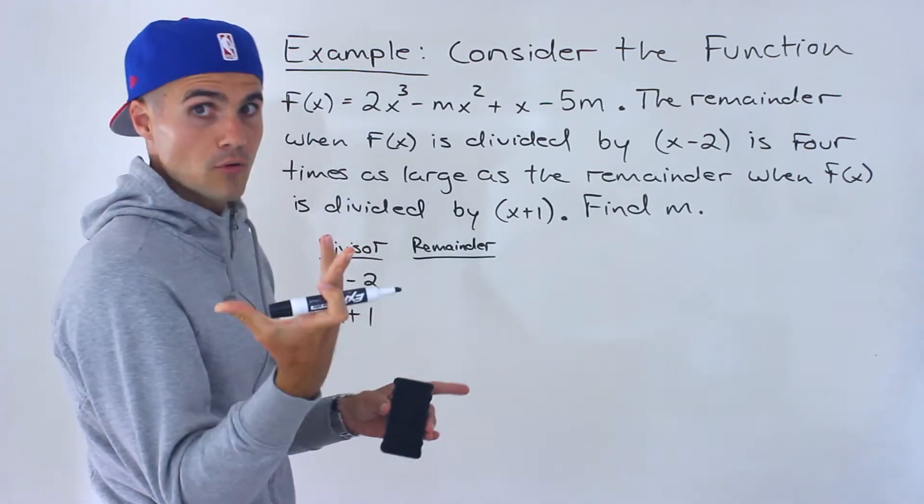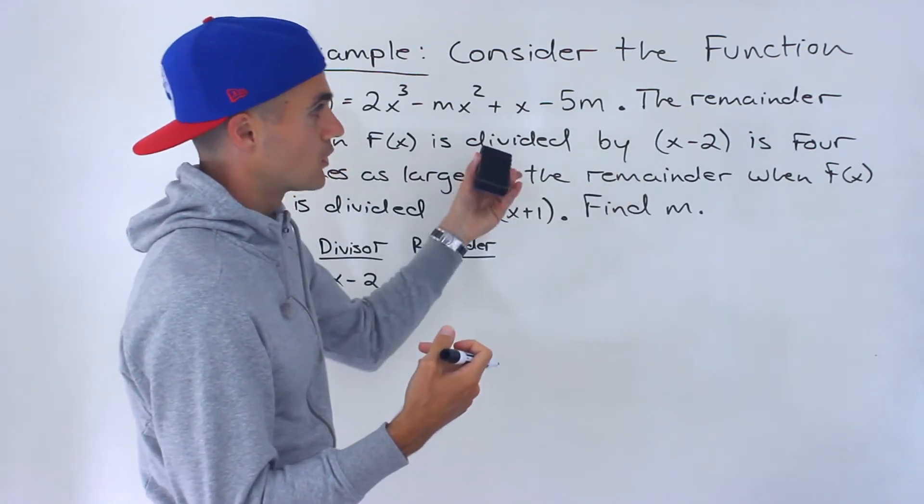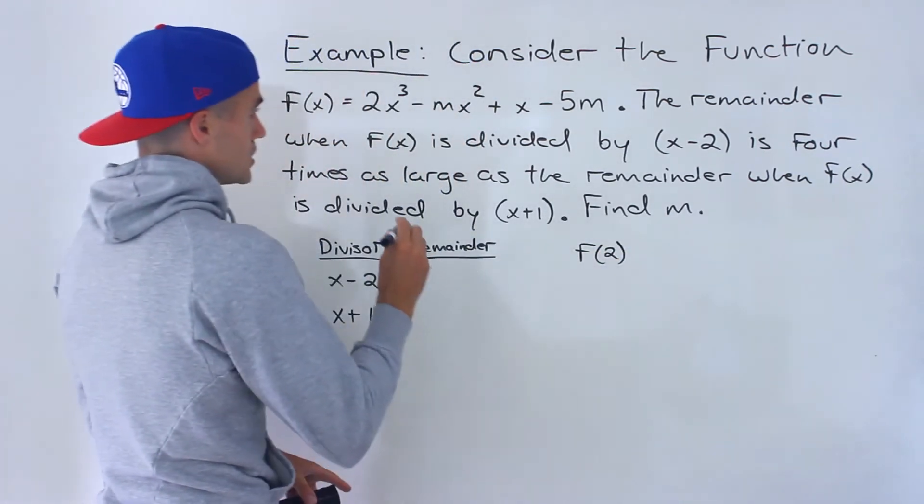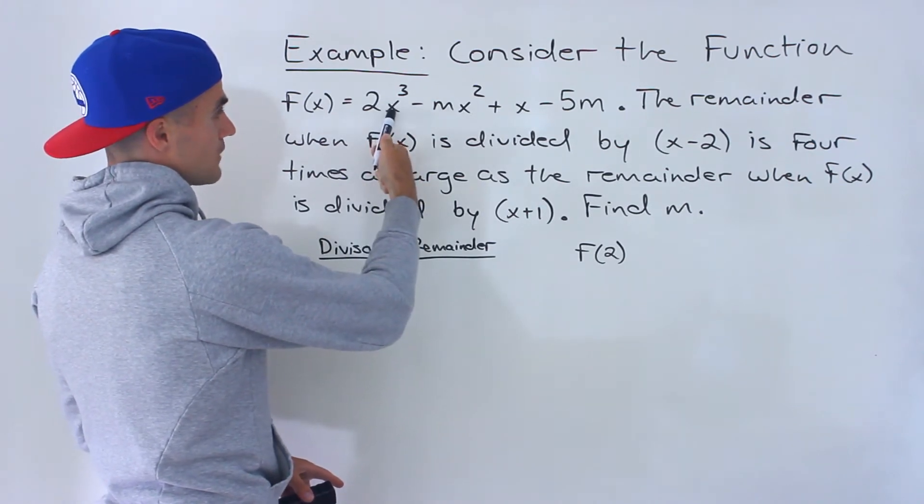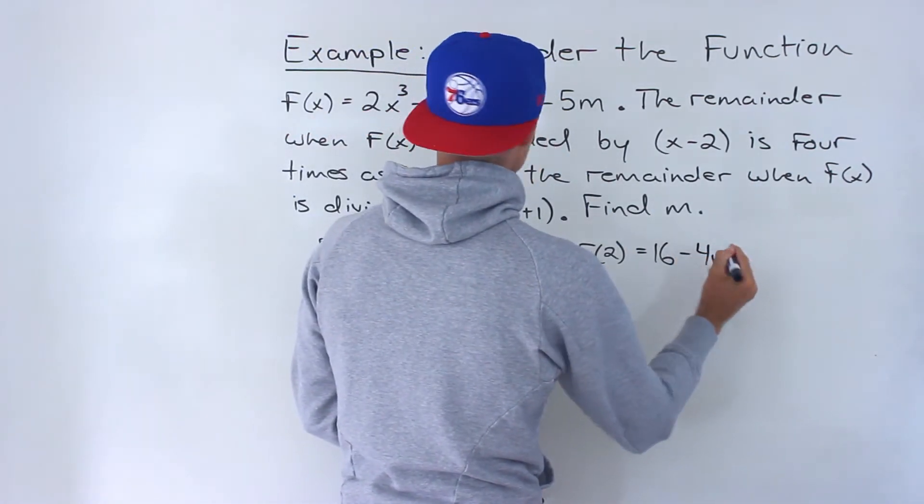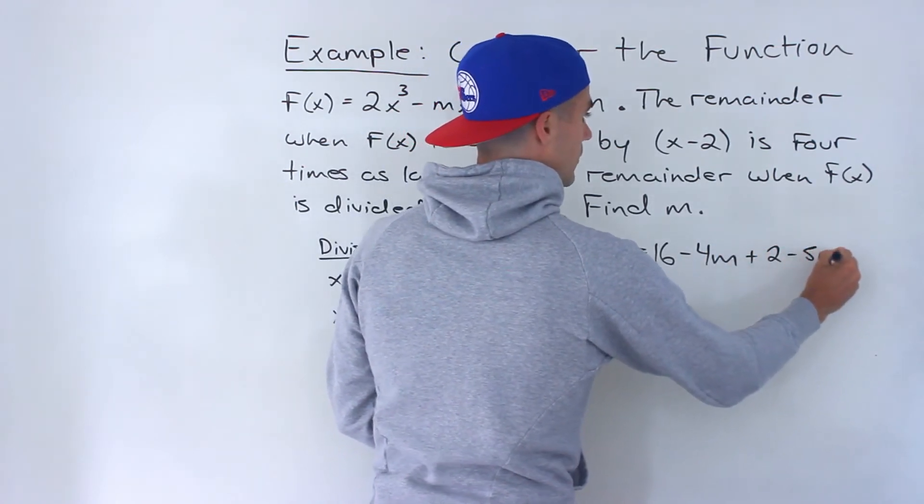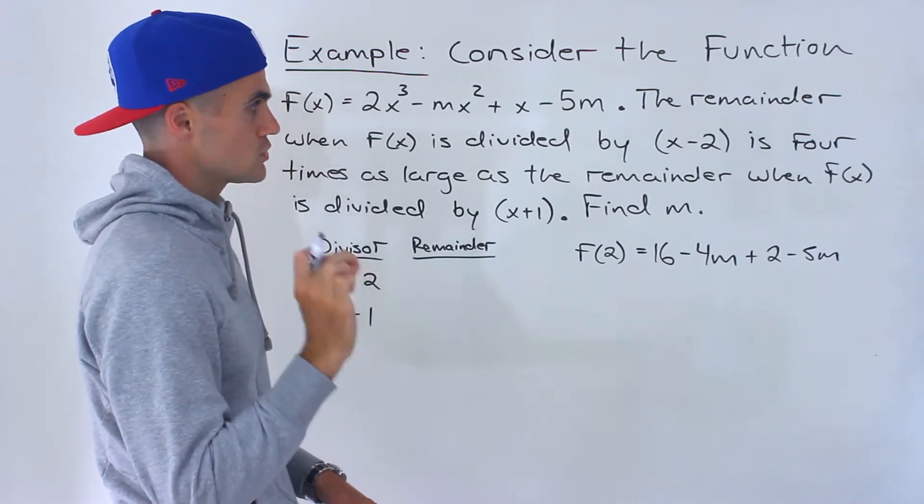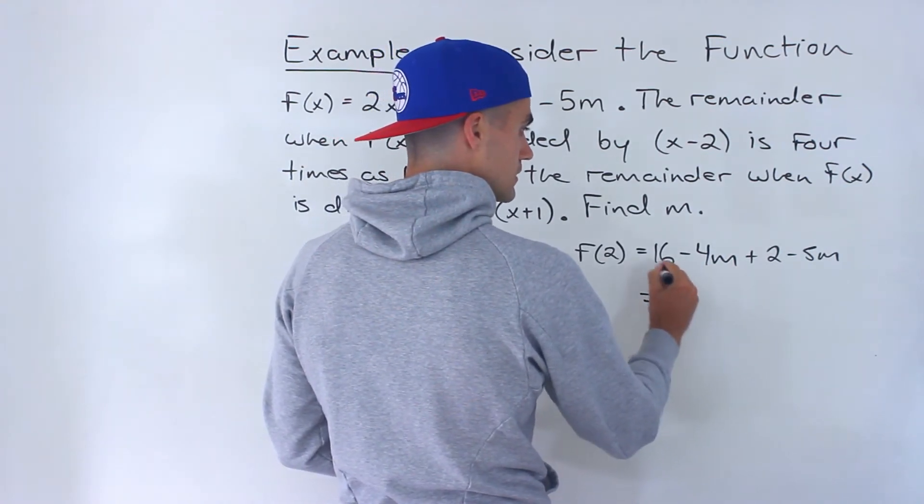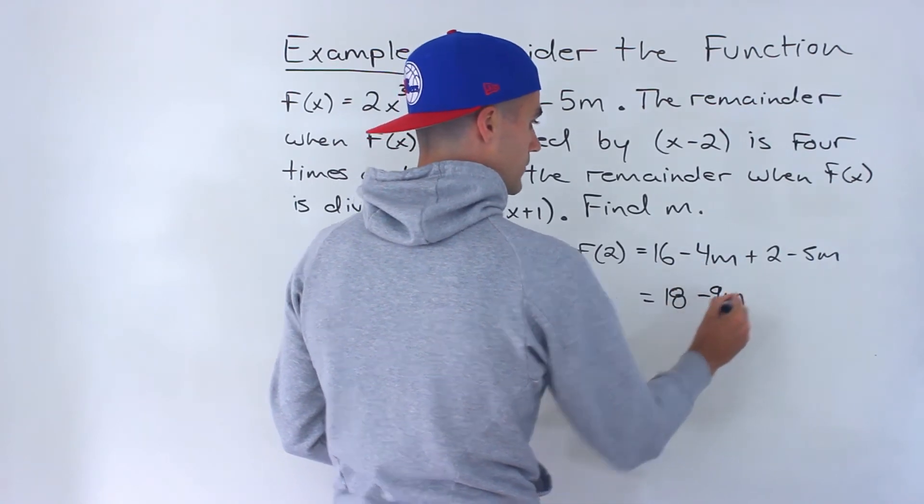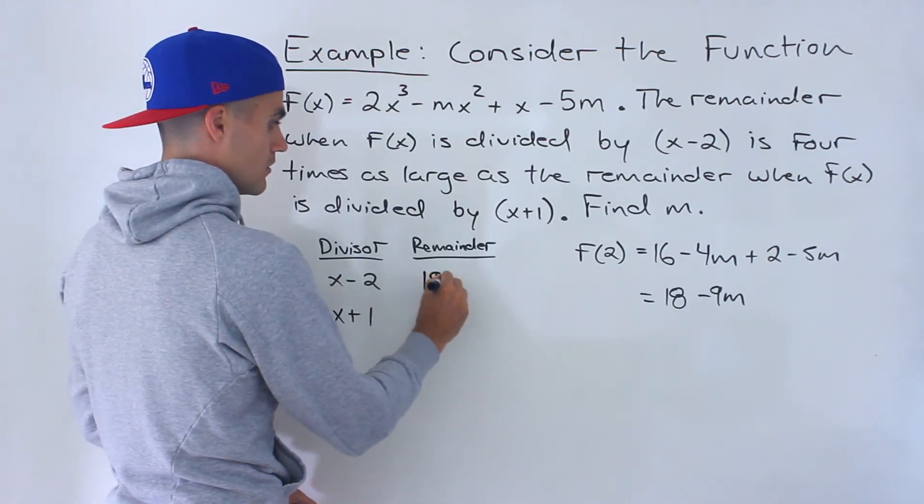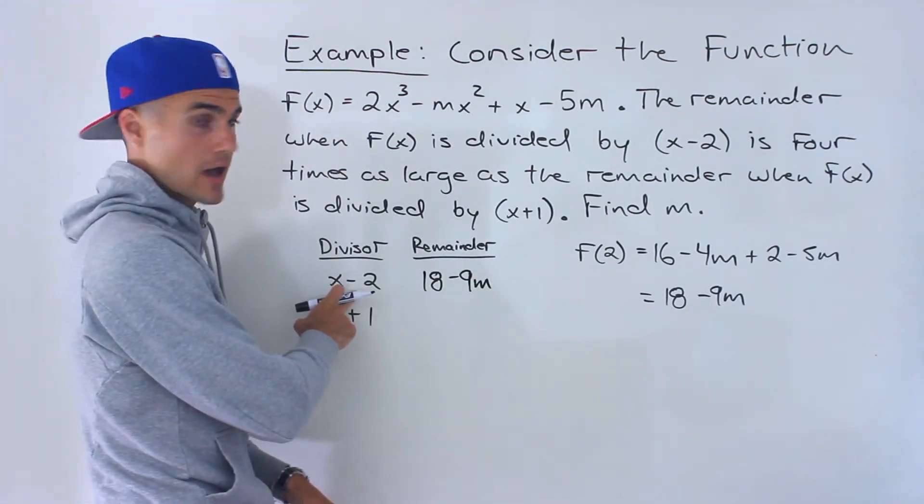By the remainder theorem, if you're dividing the polynomial by x minus 2, the remainder is f(2). We plug in 2 for all x values: 2³ is 8 times 2 is 16, minus 2² which is 4 times m gives minus 4m, plus 2, minus 5m. Simplifying, 16 and 2 gives 18 minus 9m. So the remainder when f(x) is divided by (x-2) is 18 - 9m.